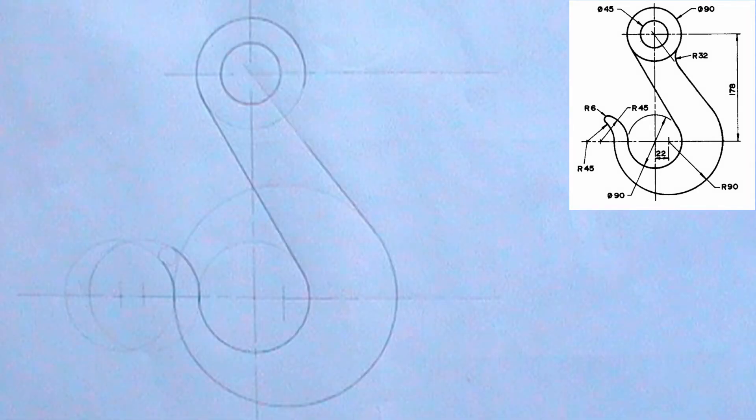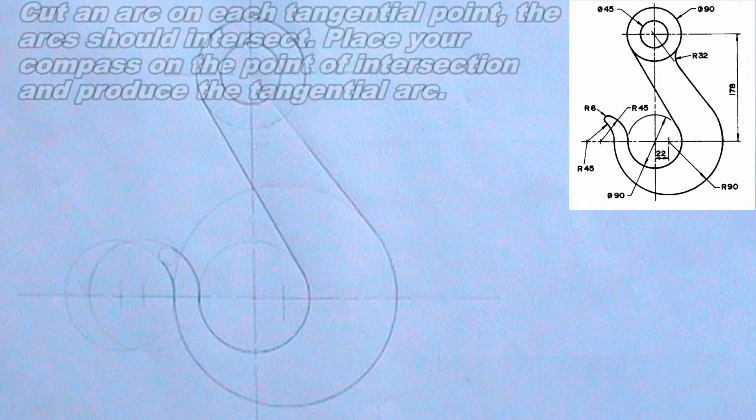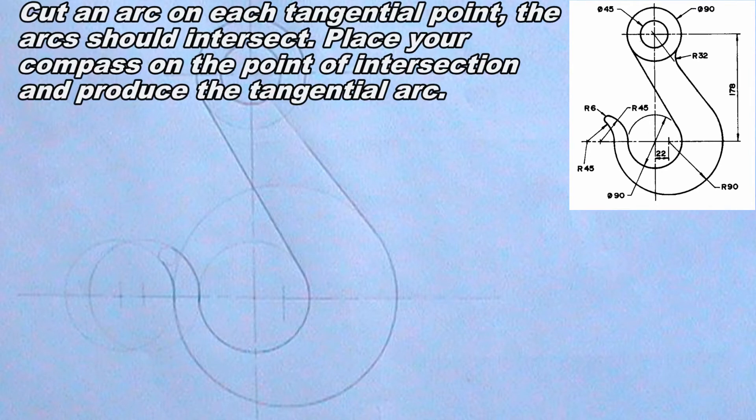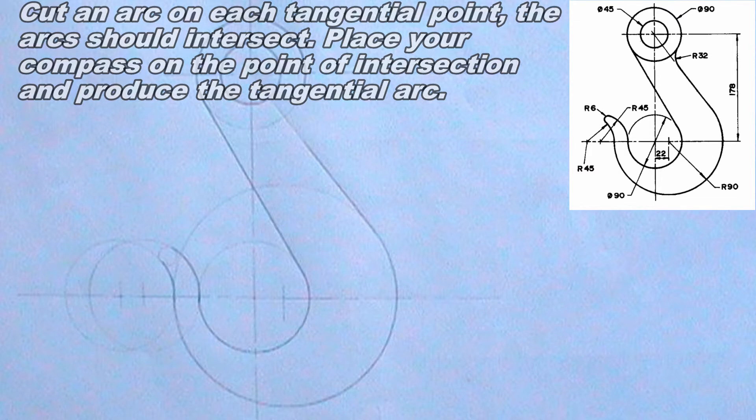I will produce a tangential. I will do so by placing my compass on the two tangential points, cutting arc at each point. The two arcs should intersect. I will place my compass on the point where the arcs intersect, then I will produce the tangential arc. I will perform this step using a radius of 16 mm.